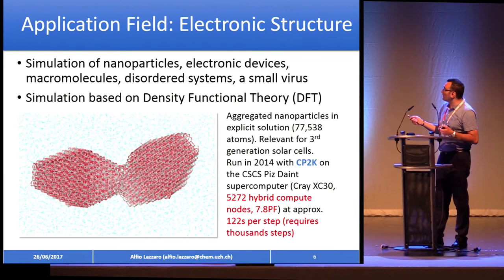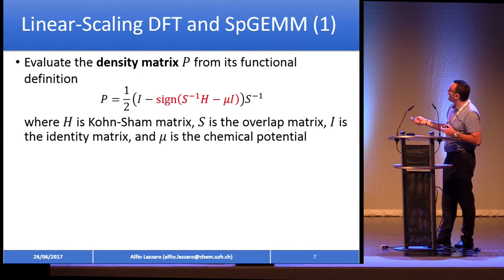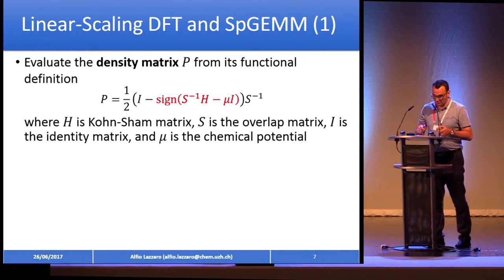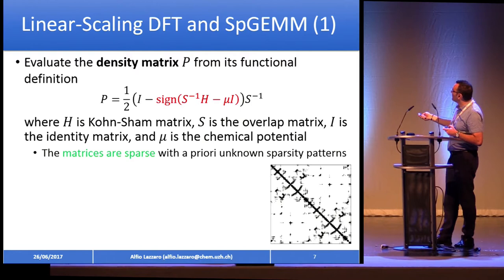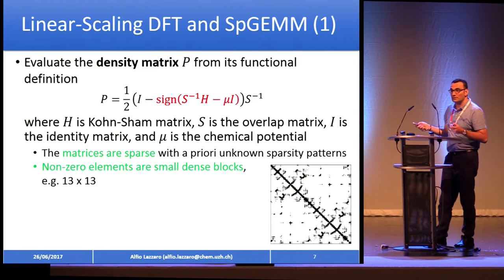All of those calculations are based on density functional theory — specifically, linear-scaling density functional theory. In this case, you have a formula to evaluate the density matrix, and all the matrices here — H and S — are sparse matrices. You have these unknown sparse patterns, and the non-zero elements in these matrices are blocks, which can be a size of 13×13 or any dimension, like 5×5 and so on.